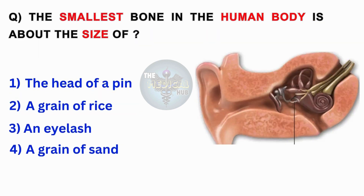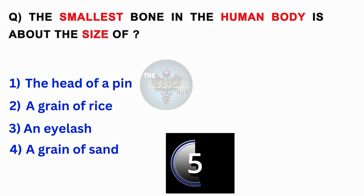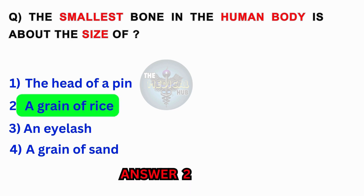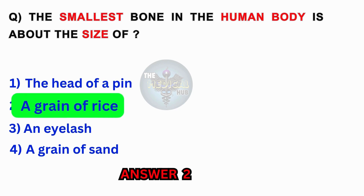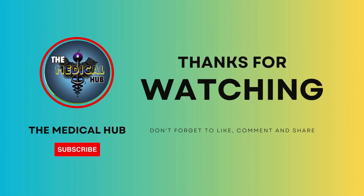The smallest bone in the human body is about the size of? The head of a pin, a grain of rice, an eyelash, a grain of sand. Answer 2: A grain of rice.